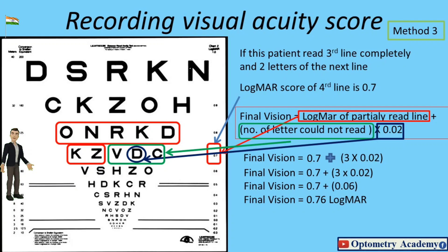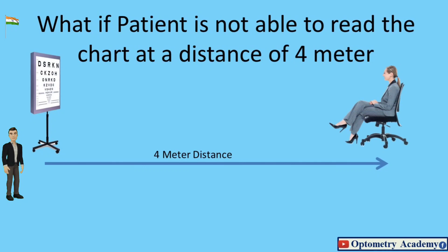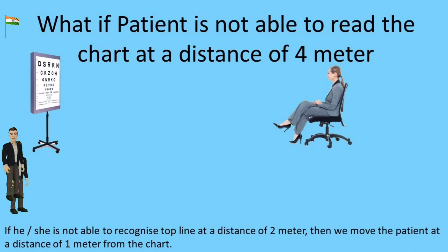What if patient is not able to read the chart at a distance of 4 meters? We ask the patient to move at the marking of 2 meters. If he or she is not able to recognize top line at a distance of 2 meters, then we move the patient at a distance of 1 meter from the chart.